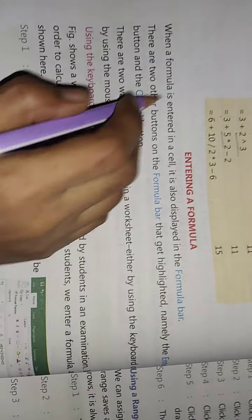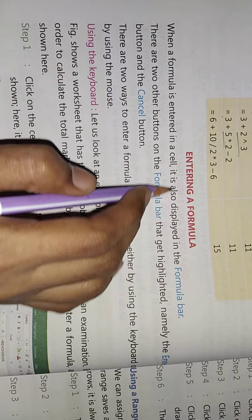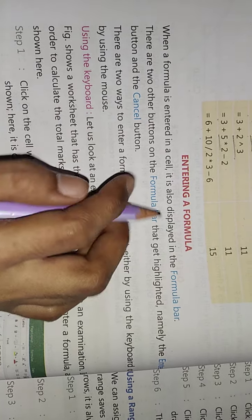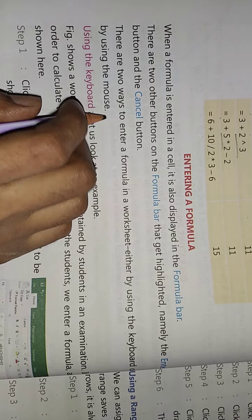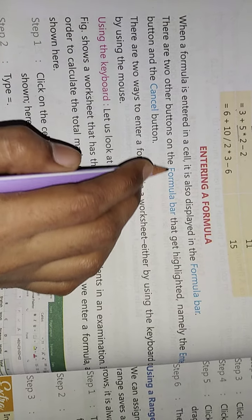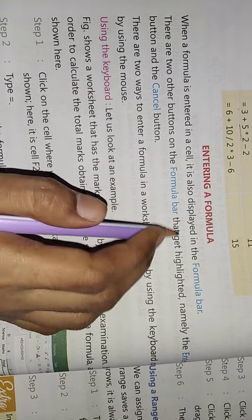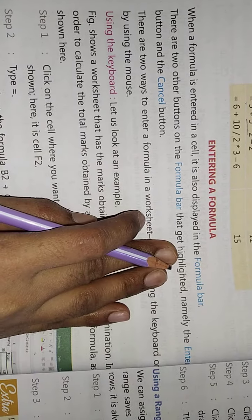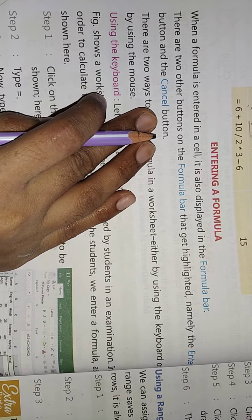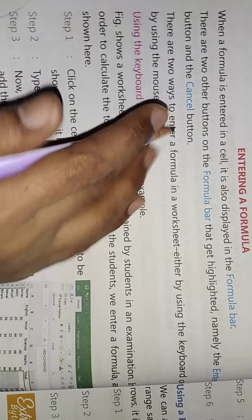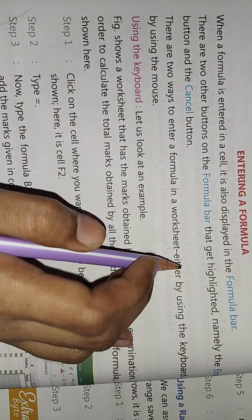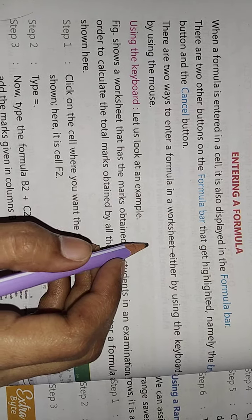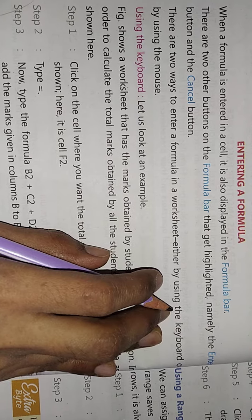When a formula is entered in a cell, it is also displayed in the formula bar. There are two other buttons on the formula bar, namely the enter button and the cancel button. There are two ways to enter a formula in a worksheet, either on the keyboard or on the mouse.